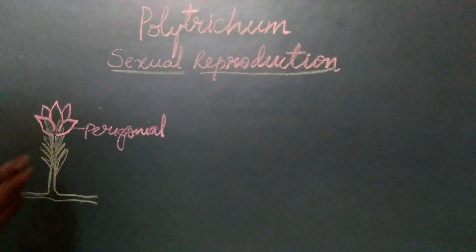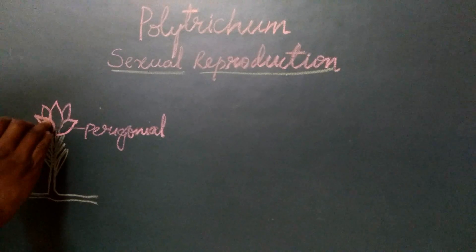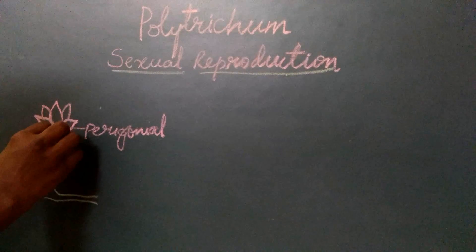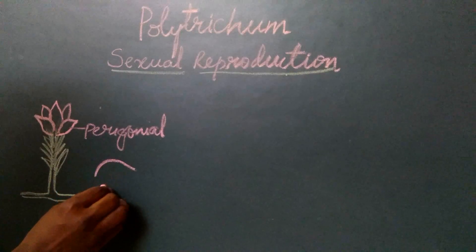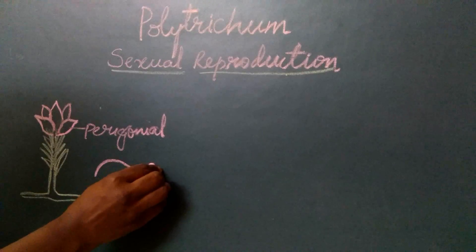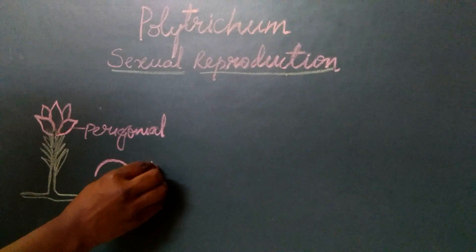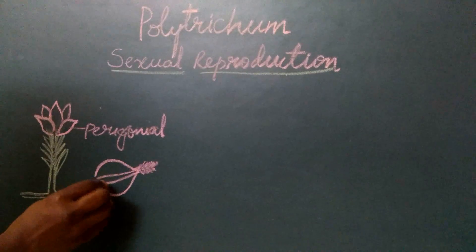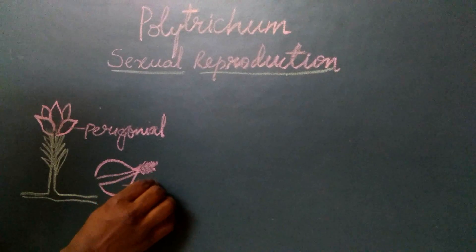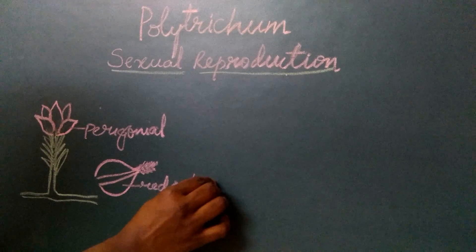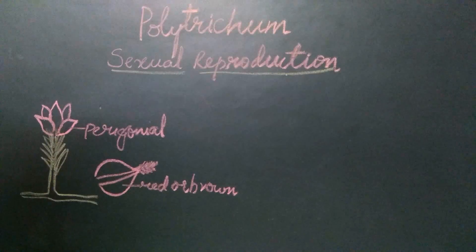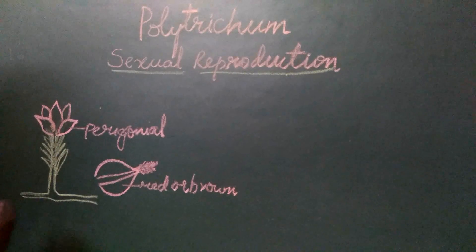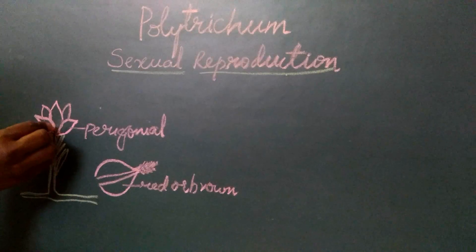These perigoneal leaves are different from the other foliage leaves — they differ in their size, shape, and colour. When we look at each leaf, the perigoneal leaf has a broad sheathing leaf base and an apical region which is drawn into a bristle-like structure. The colour is red or brown. In the axils of these perigoneal leaves, we find a large number of antheridia developing in the axillary position.